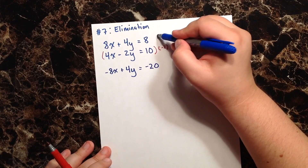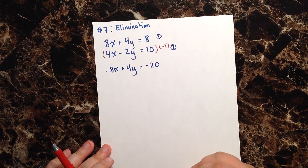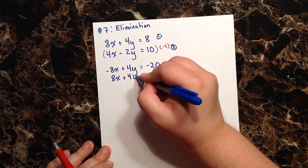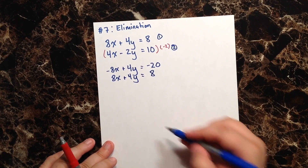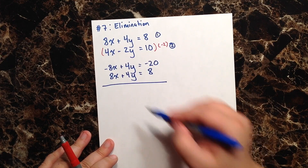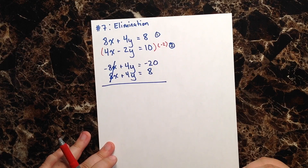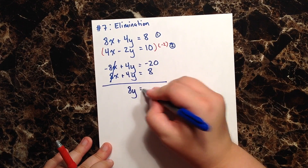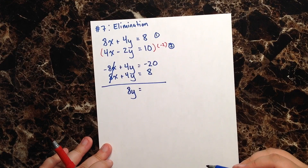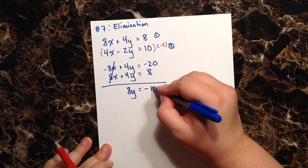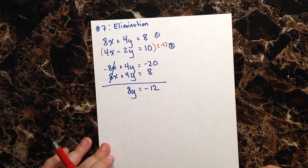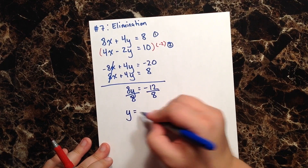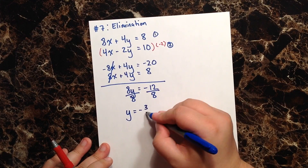Now I rewrite the first equation below: 8x plus 4y equals 8. The x's cancel out. Adding the y terms: 4y plus 4y equals 8y. Adding the constants: negative 20 plus 8 equals negative 12. Dividing both sides by 8, y equals negative 3 halves.